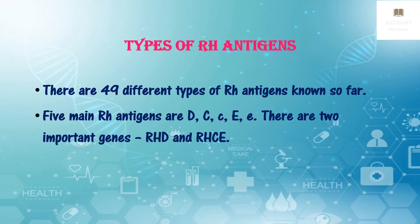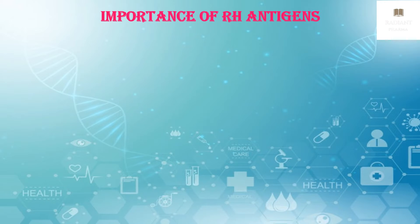Now let us see what is the difference between an RH negative individual and an RH null individual. The person with RH negative blood group lacks only the RH D antigen, whereas the person with RH null blood group lacks all of the 49 different RH antigens known.